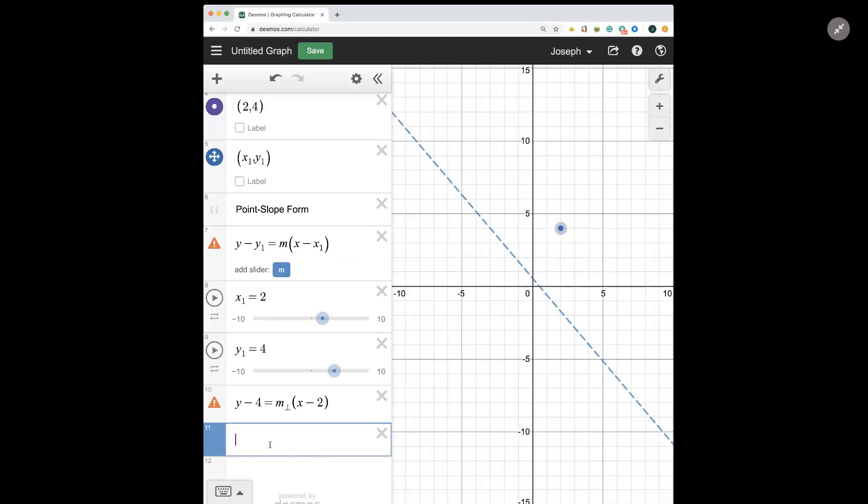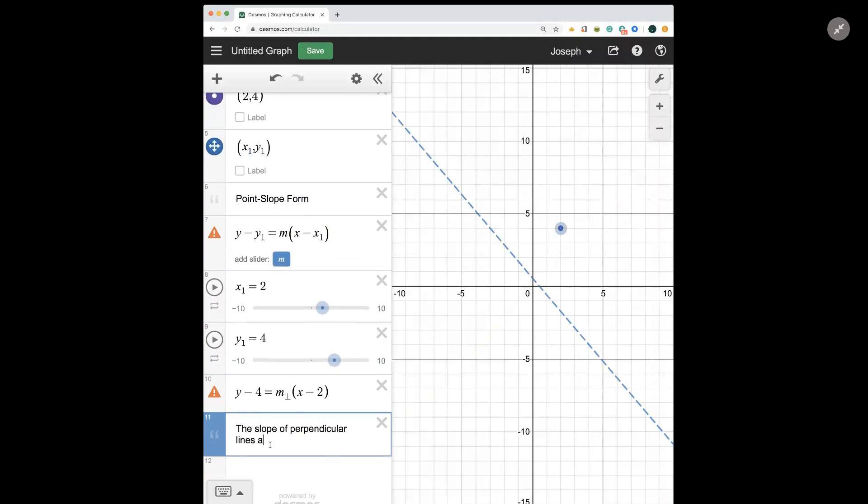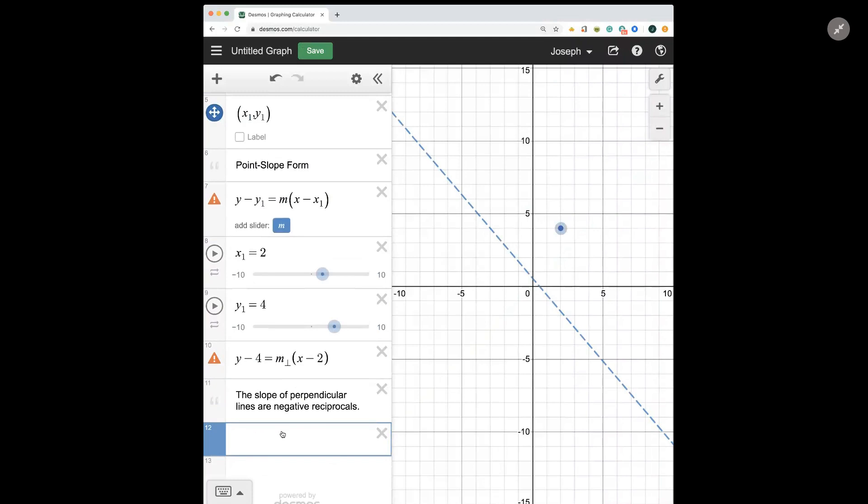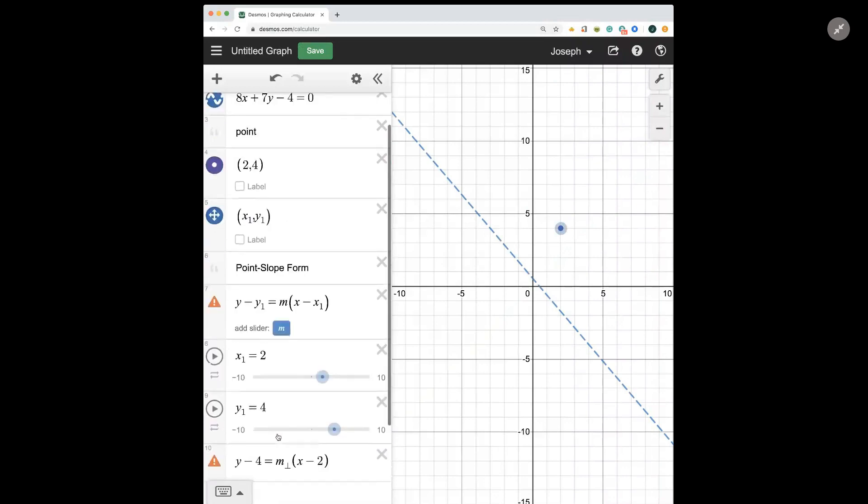And so what we need to know is that the slope of perpendicular lines are negative reciprocals. So I'm not going to talk about what a negative reciprocal is in any depth in this video because it's a short video. But let's quickly figure out what the slope of the line is and find what its negative reciprocal is, so we can plug that in here and have our equation.